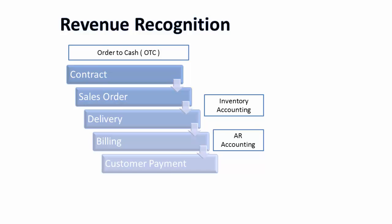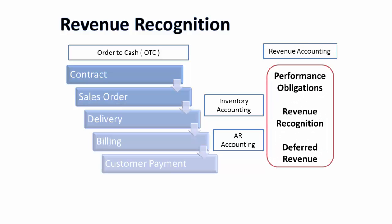So as a process in order-to-cash, there is inventory accounting. At the same time, there is revenue accounting — depending upon the performance obligations associated with the contract or sales order — which will result in the revenue accounting.